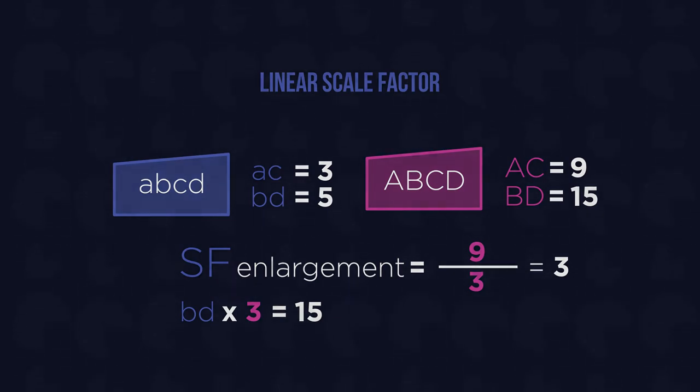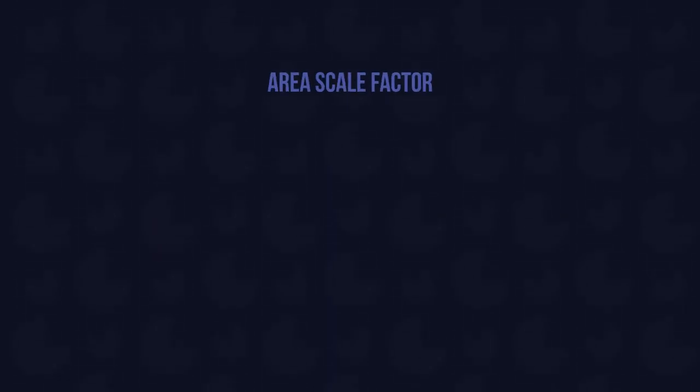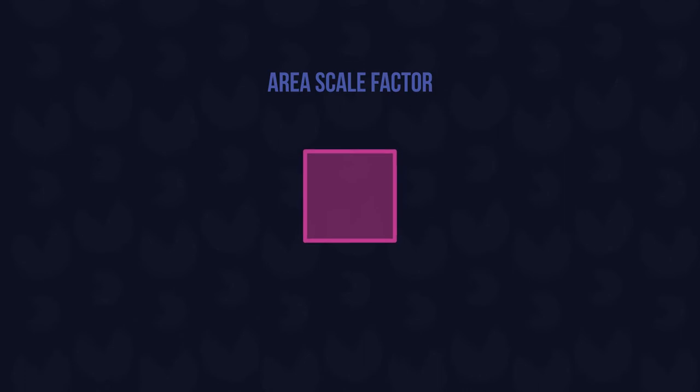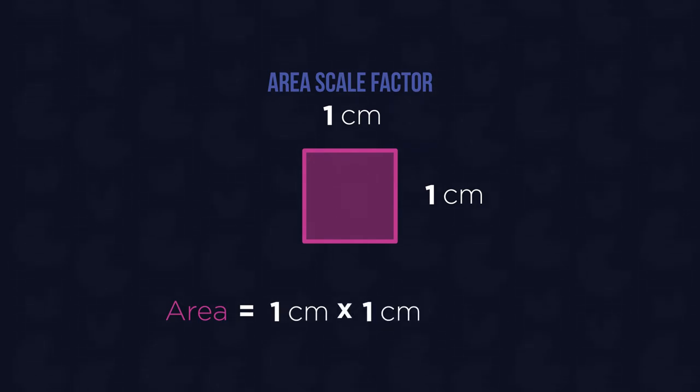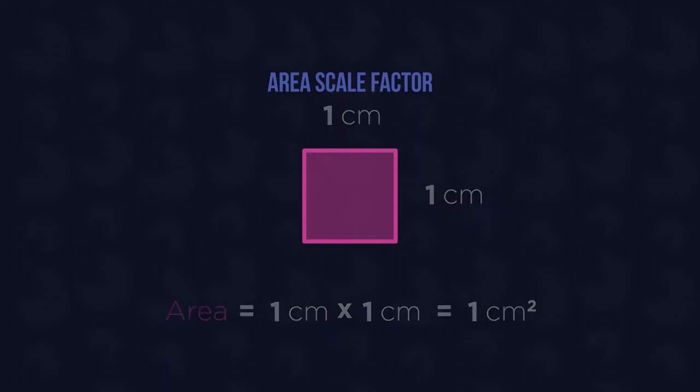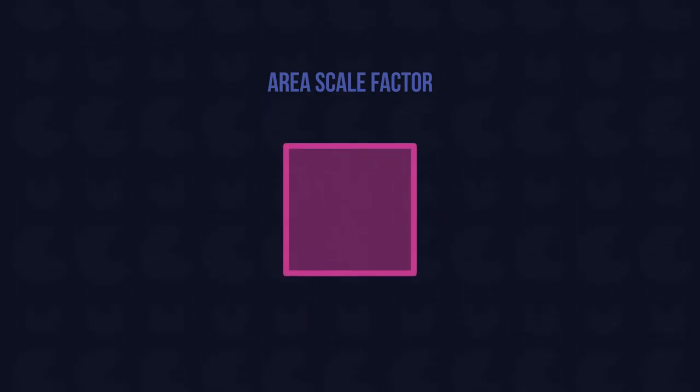The next scale factor we will take a look at is area scale factor. Suppose we have a simple square shape with edges that are 1cm long. The area of this square is 1cm times 1cm, so 1cm squared. But what happens if the shape is enlarged? If we enlarge the shape by a scale factor of 2, each of our edges will now be 2cm. It has doubled.